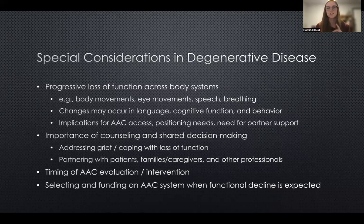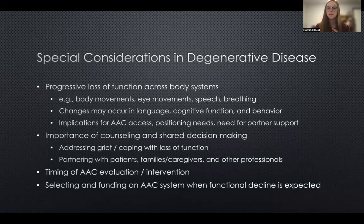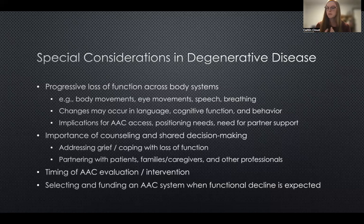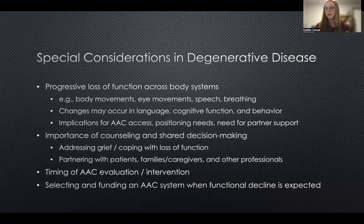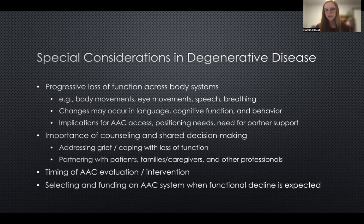Conditions such as Parkinson's, multiple sclerosis, and ALS can also have some impact on cognition and behavior. All of these factors have implications for AAC access, positioning needs, and the need for communication partner support over time. For example, if someone is losing their ability to move their hands and arms, they won't be able to directly press buttons on a speech generating device — but perhaps they can use another modality such as eye gaze or head pointing. If someone's having trouble with eye movements and vision, that's going to impact many AAC decisions, and we may need to consider modalities such as auditory scanning or partner-assisted strategies.